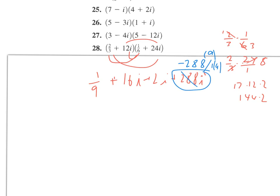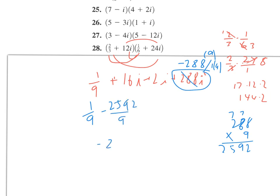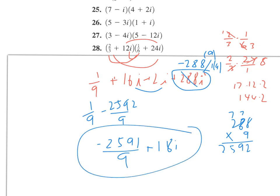Now we need to add with a common denominator. Multiplying 288 by 9 gives 2592, so on the real part we get one-ninth minus 2591 over 9, which would be negative 2591 over 9. Then combining the imaginary terms in the middle gives us plus 18i.